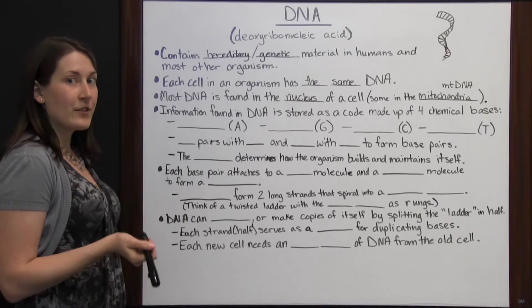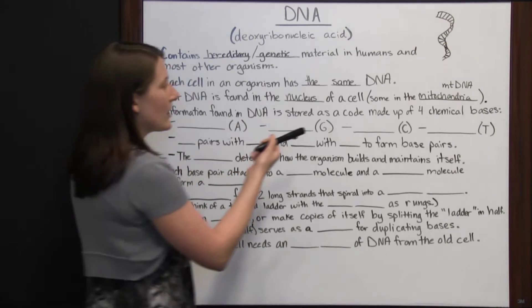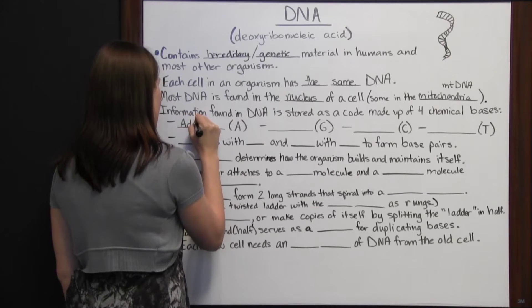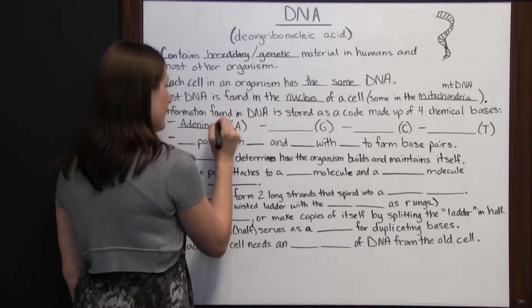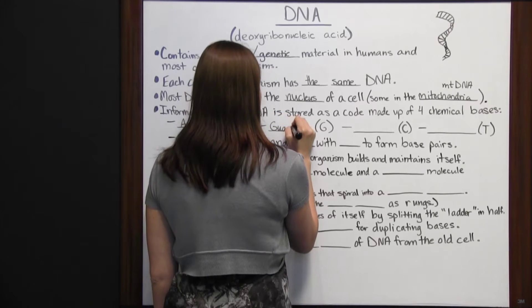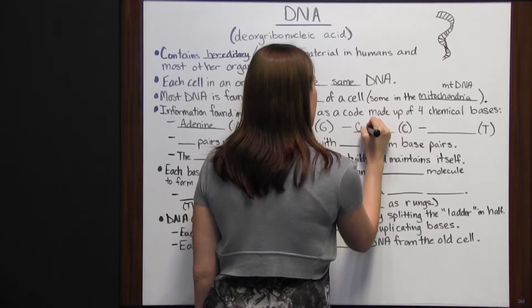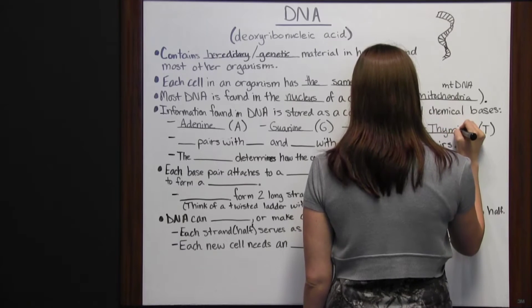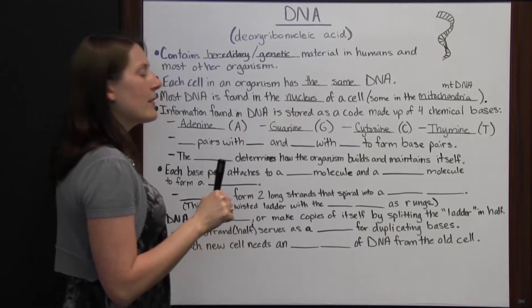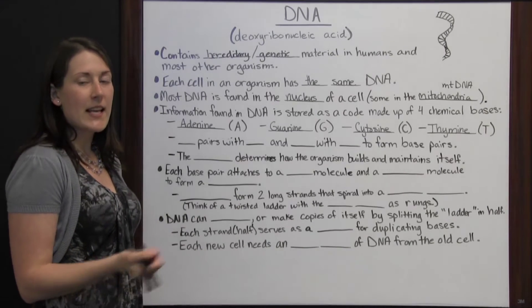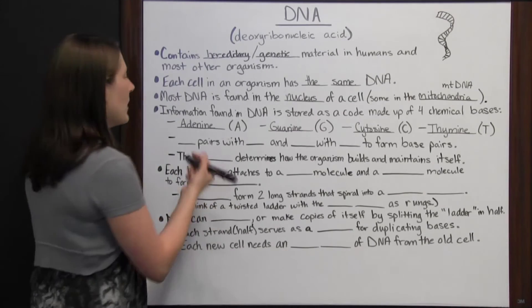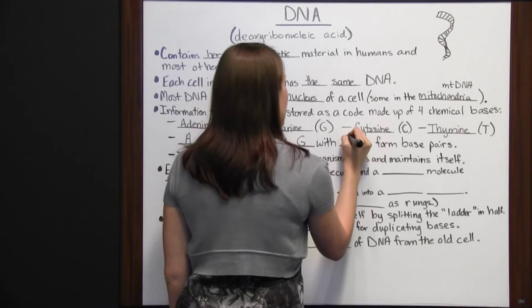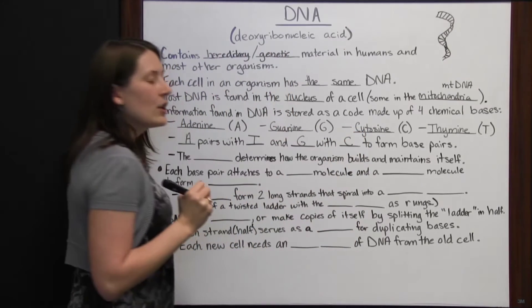That important hereditary information found in DNA is stored as a code made up of four chemical bases. We've got adenine, guanine, cytosine, and thymine. Each one of those bases is only going to pair with one other base, they can't all pair up with any of the other three, so adenine pairs with thymine and guanine pairs with cytosine to form base pairs.